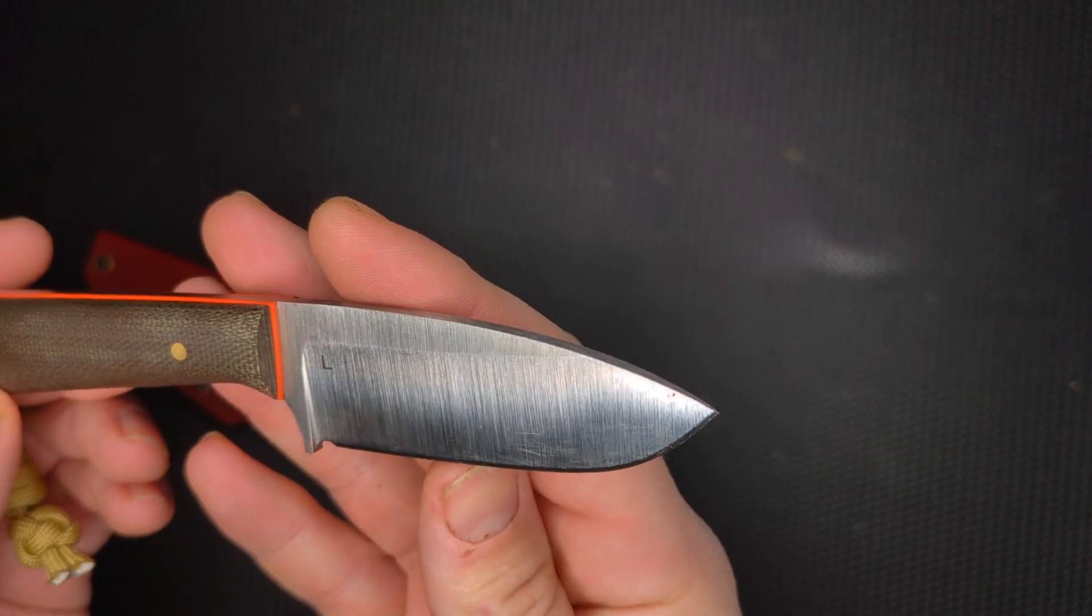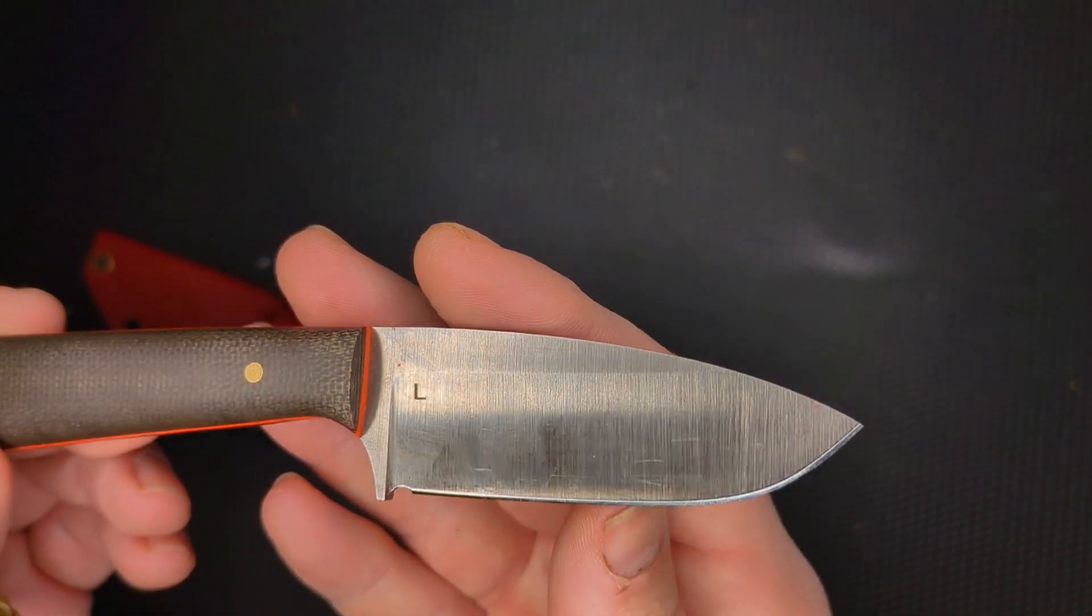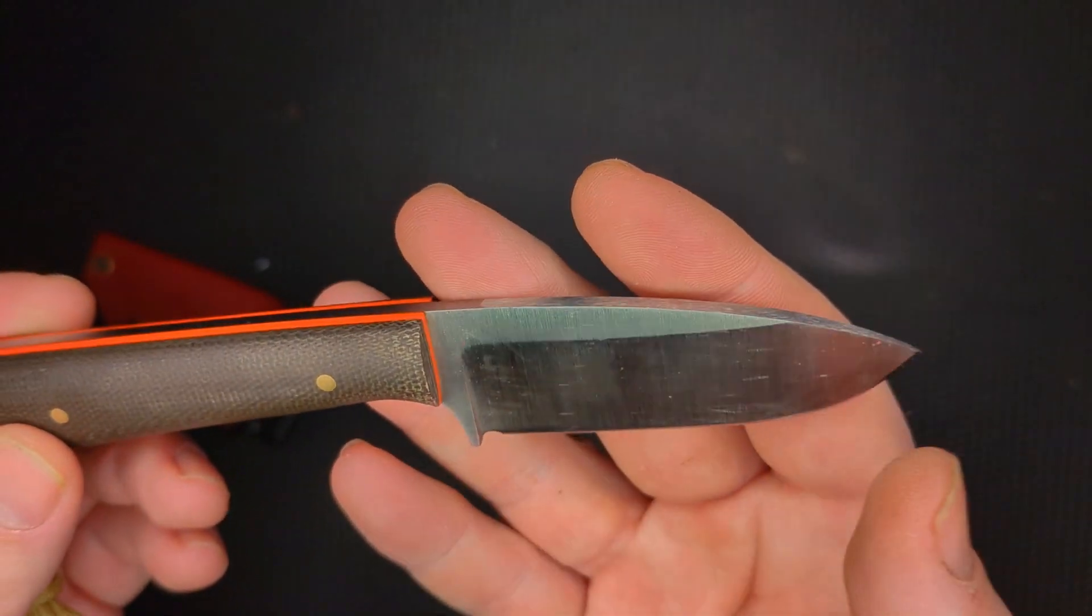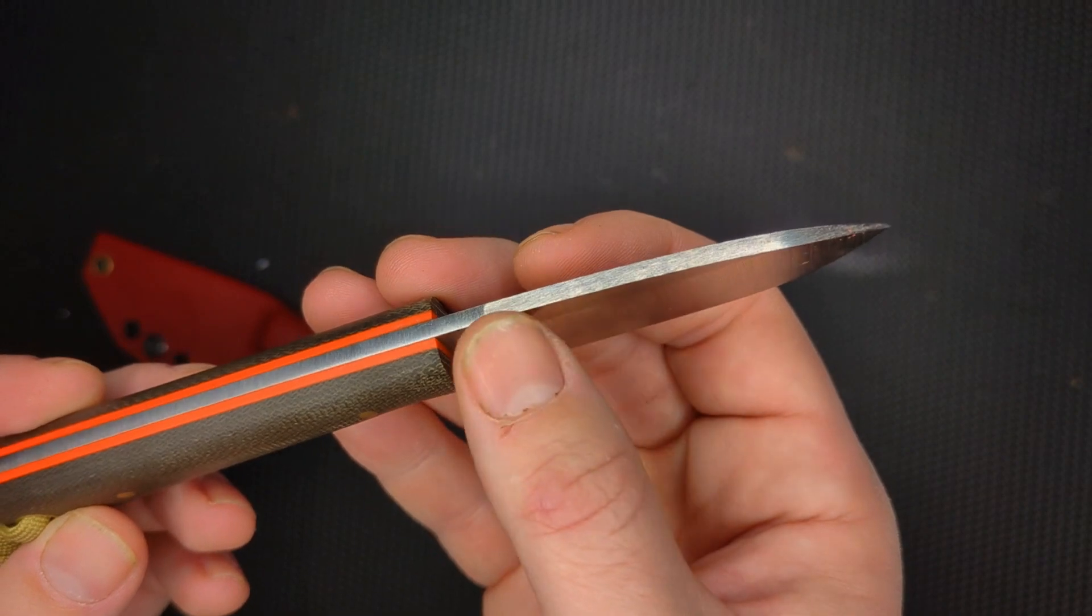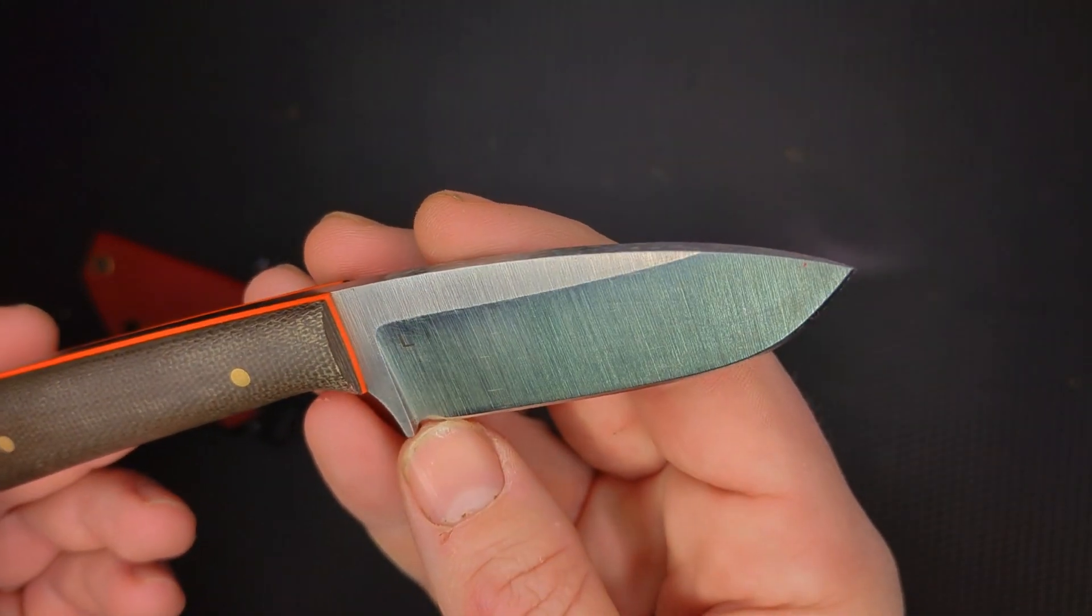The AEBL, by the way, is quickly becoming one of my favorite little fixed blade knife steels. I've only recently learned about it and started to use it, and it's a very pure stainless steel.